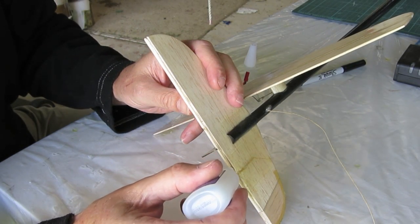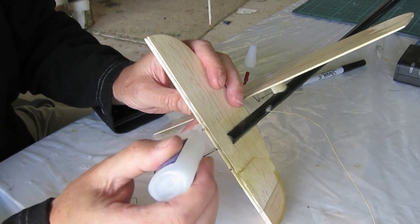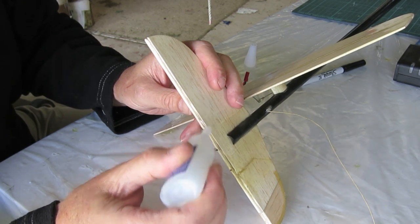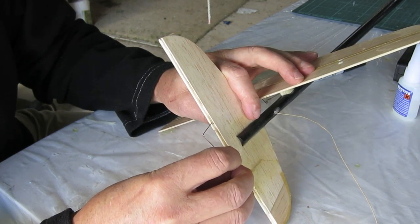Now I'm reinforcing where I drilled the holes with a bit of CA glue. You can see the crack in the rudder where I mucked up the first attempt.